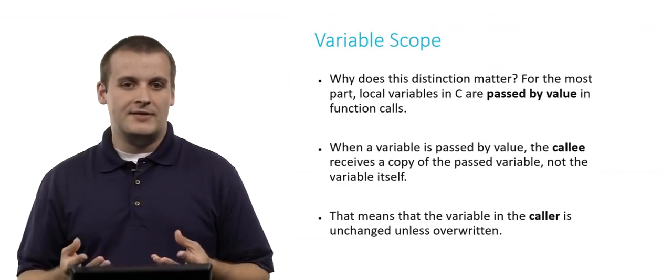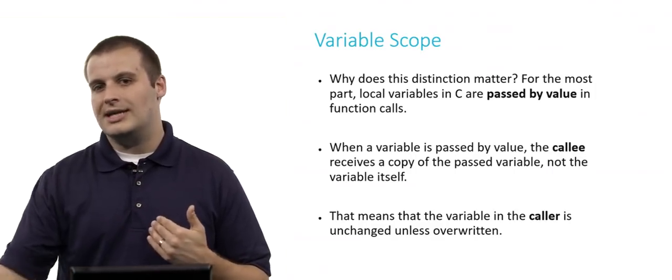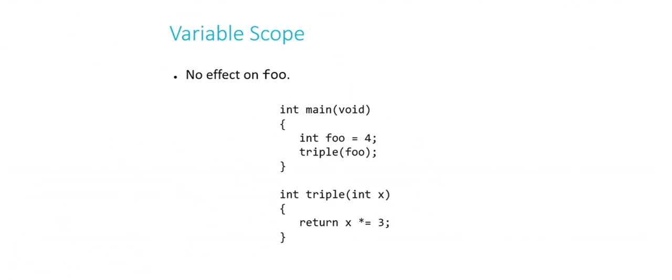So what is the side effect of that? That means that the variable in the caller, the function that is making the function call, is unchanged unless you overwrite it. For example, in this code, foo is not changed at all. Int foo equals 4, call triple of foo. Inside of triple, we would expect that foo would be multiplied by 3 and returned, but there's actually no effect.